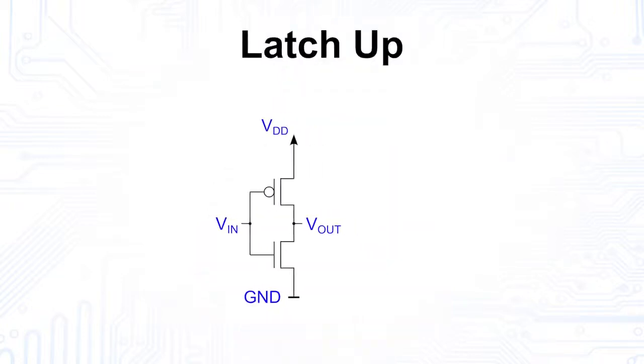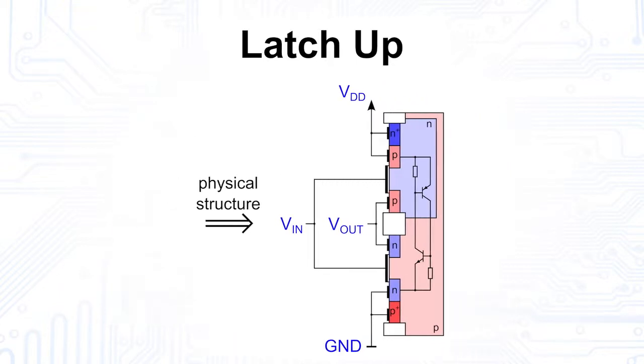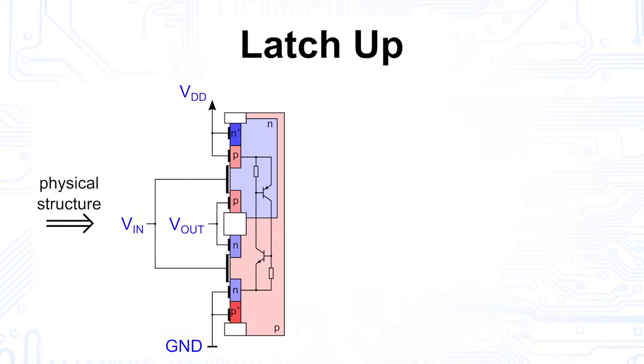If we look at the physical structure of a CMOS inverter, we can see some unwanted parasitic components within it. The different N- and P-doped wells create parasitic thyristors, which can fire due to an over-voltage and destroy the CMOS inverter. If we draw these parasitic elements into an equivalent circuit, the problem becomes understandable.